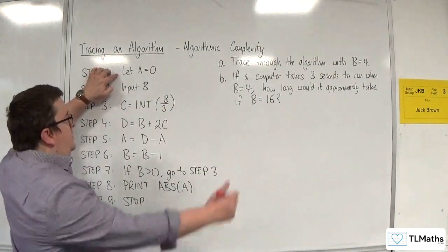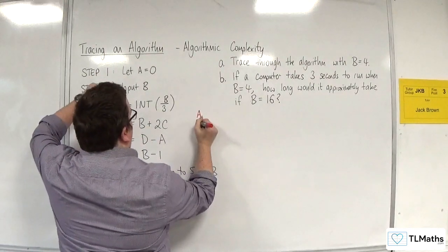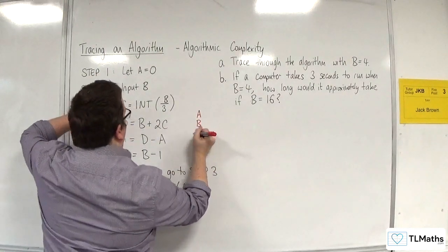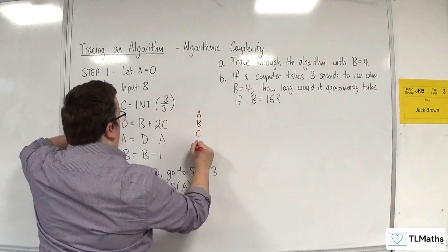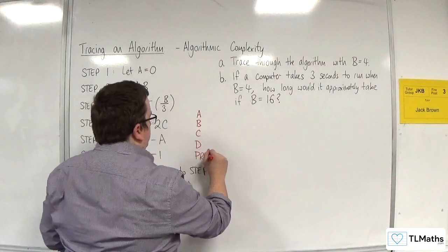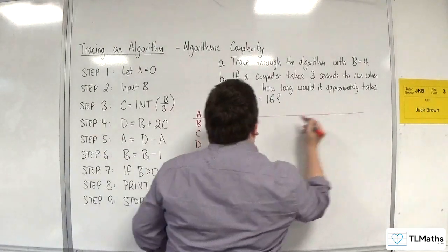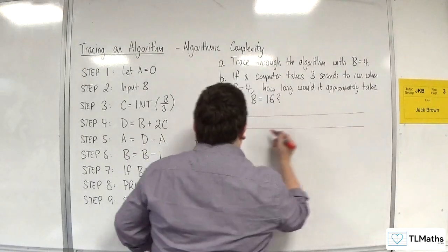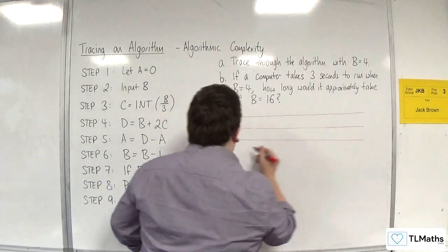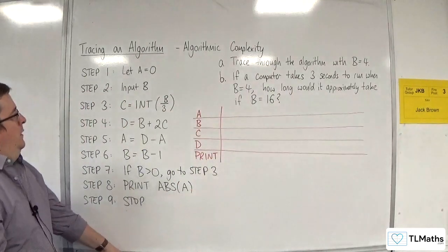So, I need, in this case, row headers of a, b, c, d, and I'm going to need a print as well. Let's set that up.